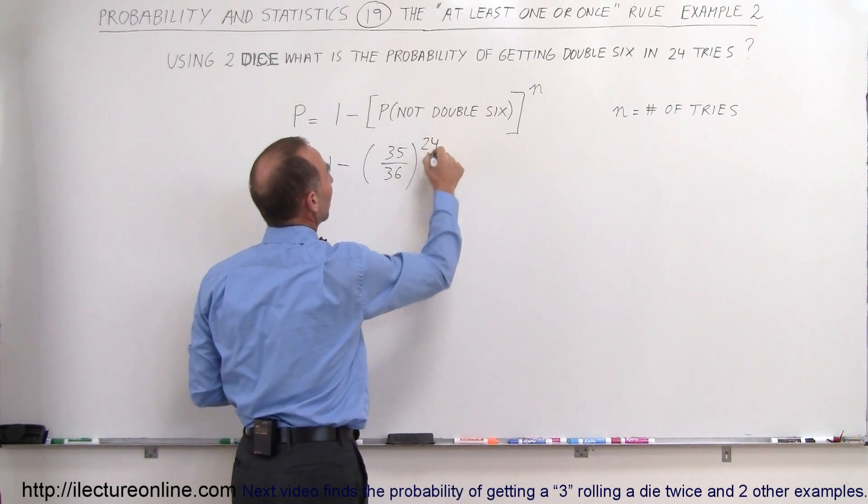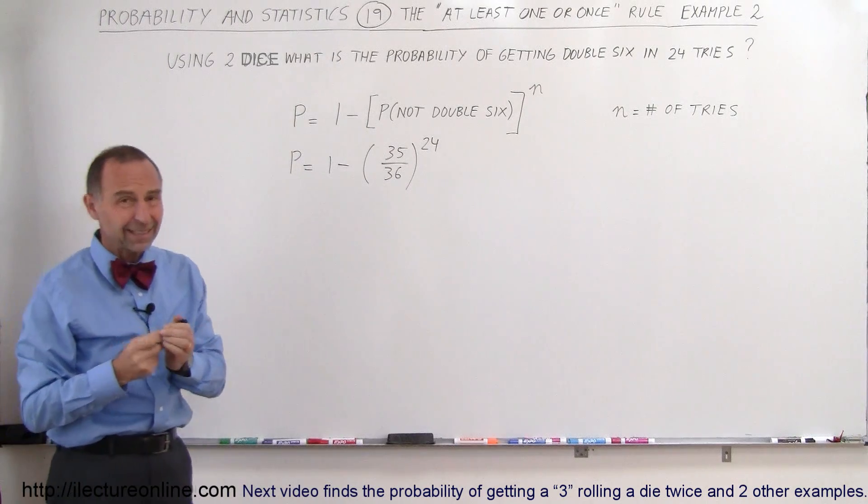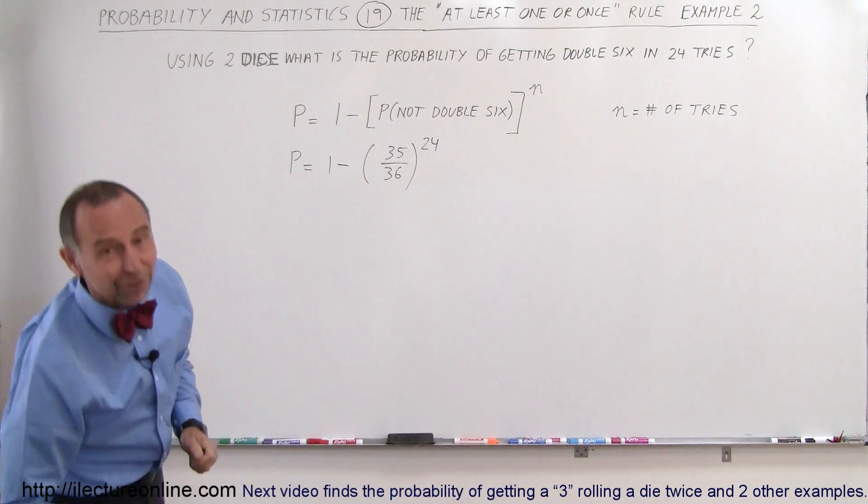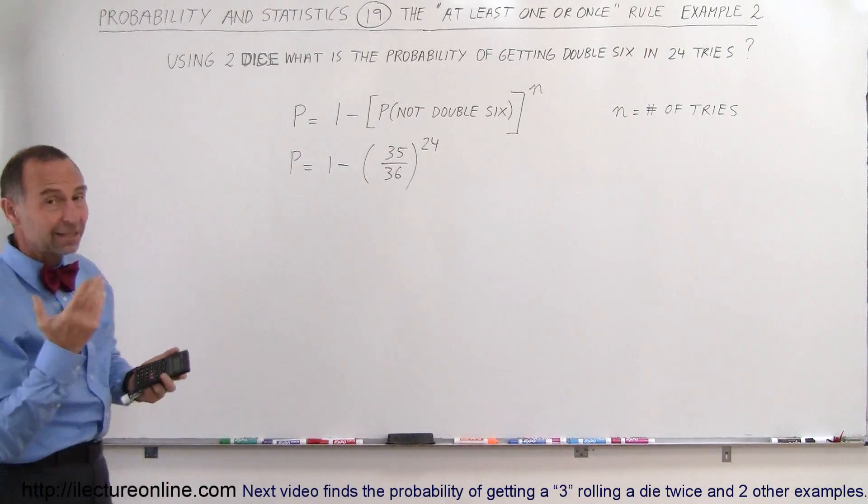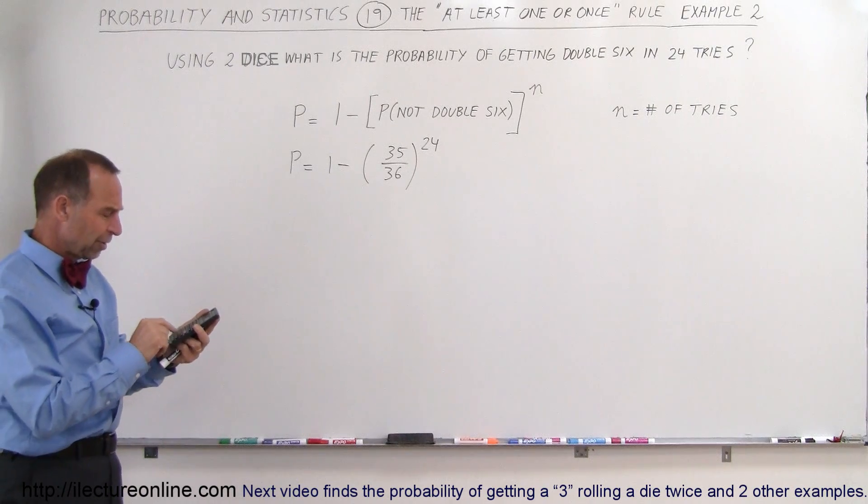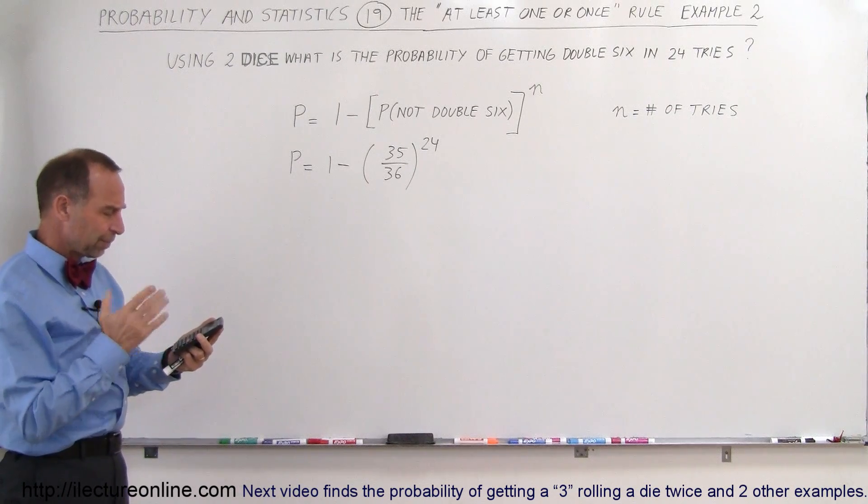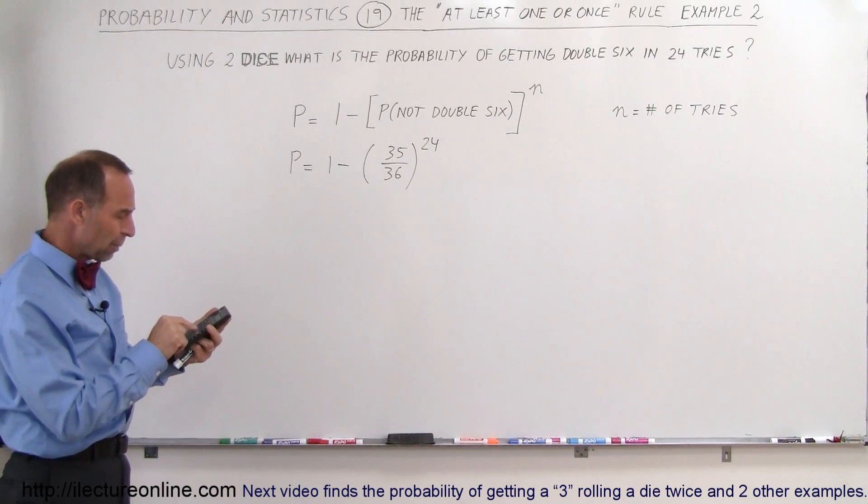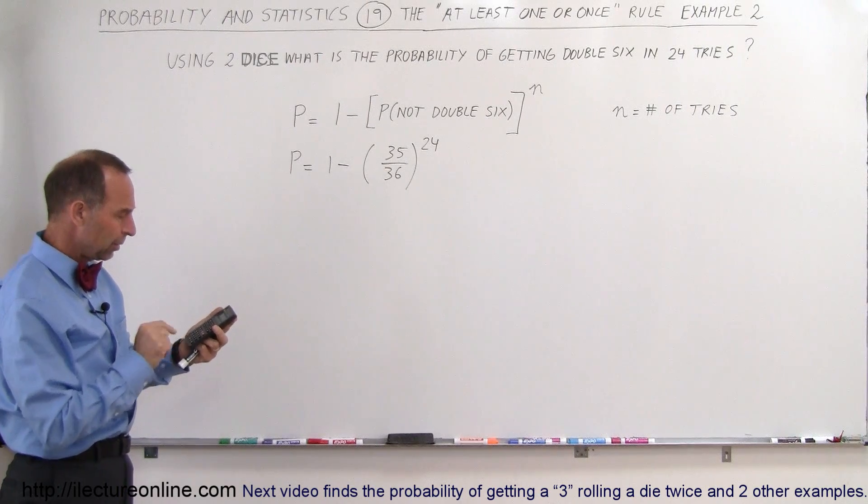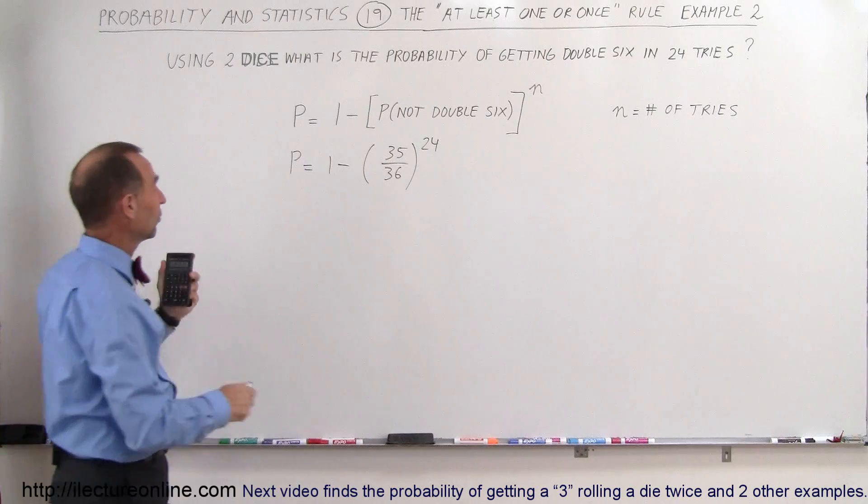Now, of course, without the calculator it would take you a very long time to work this out, but with the calculator it shouldn't take too long. 35 divided by 36, and then we take that number and we raise it to the 24th power, and then we subtract that from 1.